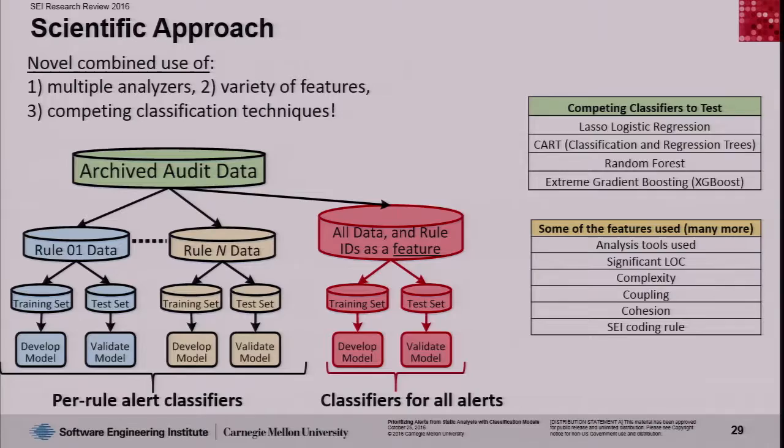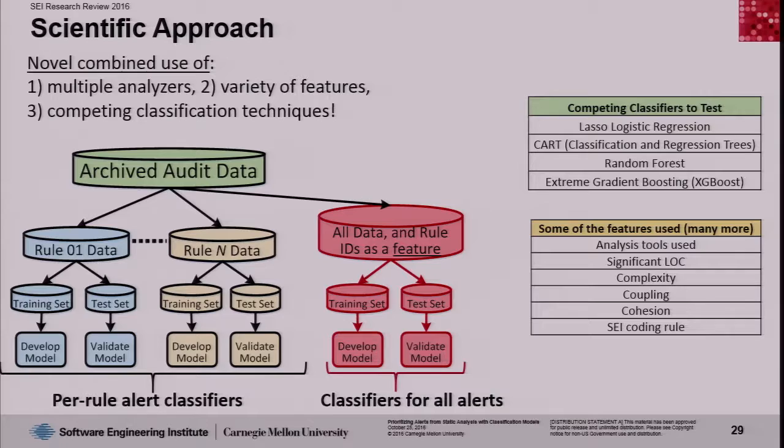The competing classifiers we tested include lasso logistic regression, CART classification and regression trees, random forest, and extreme gradient boosting. Some of the features that we used — and we actually used a ton of features — include the names of the static analysis tools, count of significant lines of code, complexity, coupling, and cohesion metrics, the ID of the SEI coding rule, and much more.